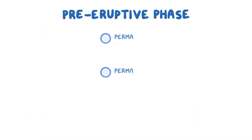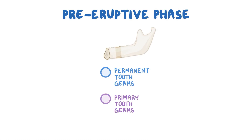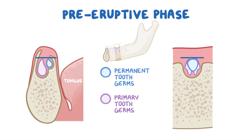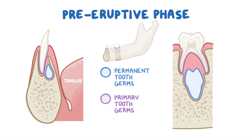The position of permanent tooth germs is also changing in relation to the primary tooth germs. At the beginning of the pre-eruptive phase, the successional tooth germs lie lingual to their primary predecessors with their occlusal surfaces on the same plane. By the end of the pre-eruptive phase, the permanent anterior teeth end up lingual and apical to the primary anterior teeth, and the permanent premolars come to rest underneath the divergent roots of the primary molars.